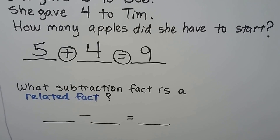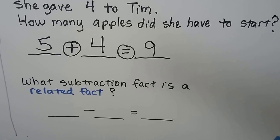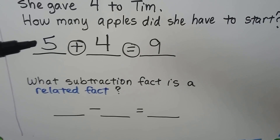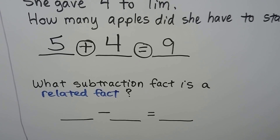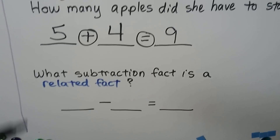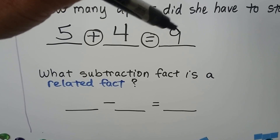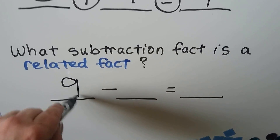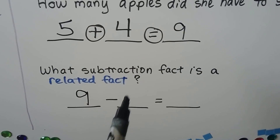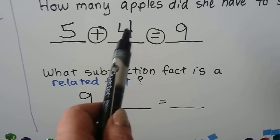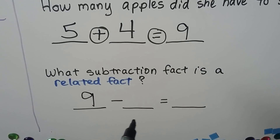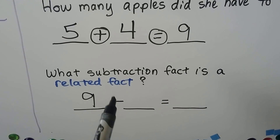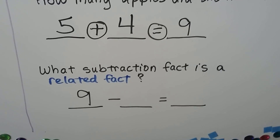What subtraction fact is a related fact to 5 plus 4 equals 9? The sum in the addition sentence becomes the minuend. For the two empty spaces, we can put either addend: we can say 9 minus 5 equals 4, or we can say 9 minus 4 equals 5. They're both true.